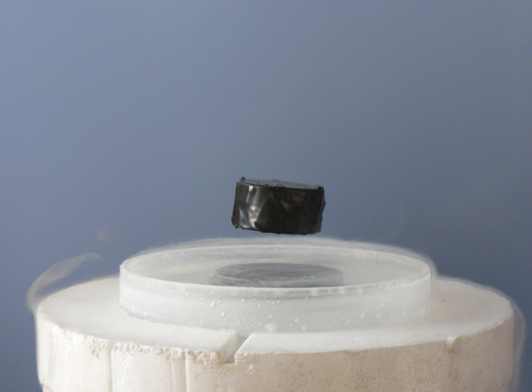In a superconductor, the resistance drops abruptly to zero when the material is cooled below its critical temperature. An electric current through a loop of superconducting wire can persist indefinitely with no power source.